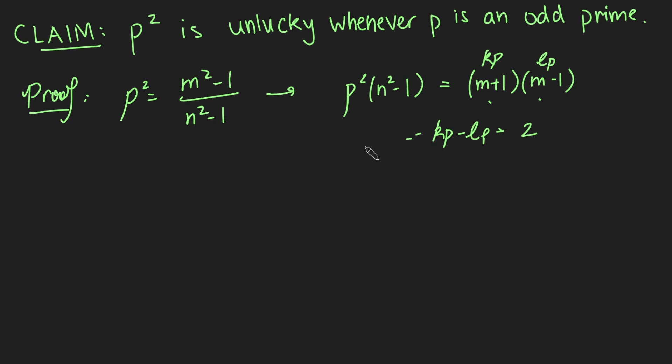But then this left-hand side is pretty clearly a multiple of p, it's p times k minus l. And this would tell us that p is a factor of 2, but there are no odd prime numbers that are factors of 2, and so this would give us a contradiction immediately. So therefore, both of these can't be multiples of p, so exactly one of them is going to be a multiple of p.